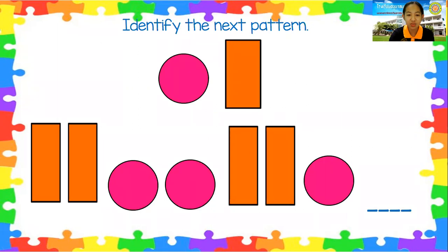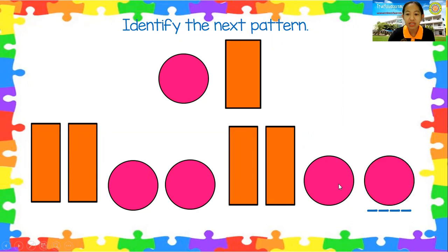Next one is rectangle, rectangle, circle, circle, rectangle, rectangle, circle. What is the next pattern? It's circle — very good, that is correct.